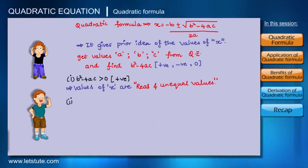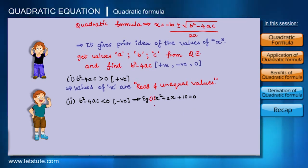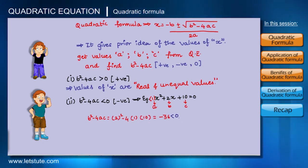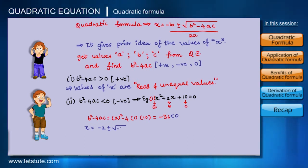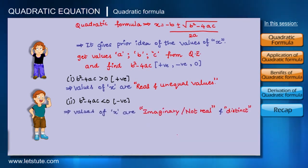Now, what if B² minus 4AC is less than zero, i.e., negative? Let's take the quadratic equation X² plus 2X plus 10 equals zero. Here A is 1, B is 2, and C is 10. The value of B² minus 4AC comes out to minus 36. Using the quadratic formula, we get X equals (minus 2 plus or minus square root of minus 36) divided by 2. Since we have a negative value under the square root, the values of X are imaginary.